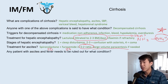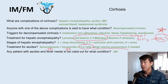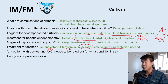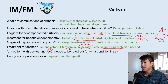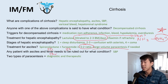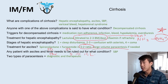Any patient with ascites and fever needs to be ruled out for spontaneous bacterial peritonitis (SBP). There are two types of paracentesis — a pimp question I got wrong in medical school: diagnostic paracentesis, where you take about 50 cc's to rule out SBP, and therapeutic paracentesis, where you remove five, ten, or fifteen liters to relieve symptoms from the amount of fluid in their belly.